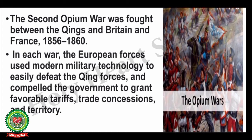The second Opium War was fought between the Qing and Britain and France from 1856 to 1860. In each war, European forces used modern military technology to easily defeat the Qing forces and compelled the government to grant favourable tariffs, trade concessions and territory. In the second Opium War, the combined army of Britain and France compelled the Qing dynasty to give trade concessions, including reduced tariff taxes on opium imported from England and France.